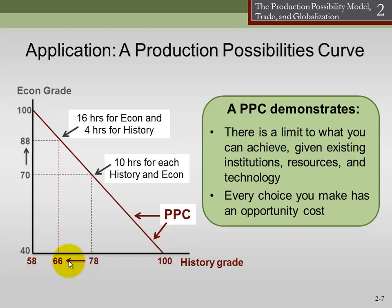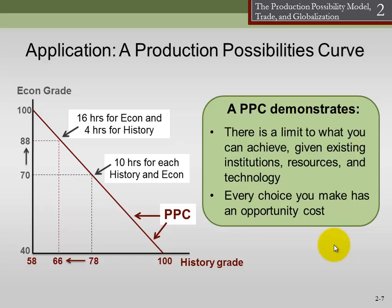The production possibilities curve demonstrates there's a limit to what you can achieve given existing institutions, resources, and technology. If you want a 90 and a 90, one way to do that is to shift that curve — increase your resources. For example, you spend 10 hours on your own in history and 10 on economics, getting 70 and 78. But if you take two of those hours and spend them with your professor discussing your questions, maybe you become much more effective — you shift the curve out and get a better grade in both. Every choice you make has an opportunity cost: every time you make a choice, you did something, but it also means you did not do something, which means you gave that up.